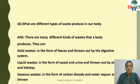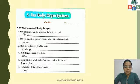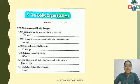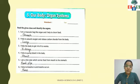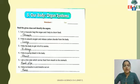Now these are your workbook worksheets for chapter number five. Number one: I am a muscular bag-like organ and help in the churning of food — the organ is the stomach. Number two: I help to absorb oxygen and release carbon dioxide from the body — the organ is the lungs.